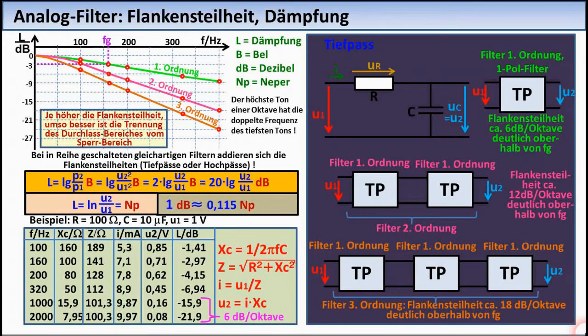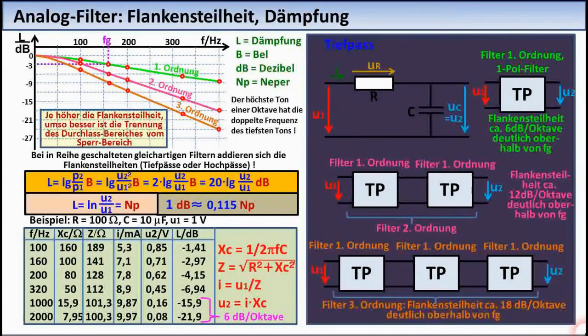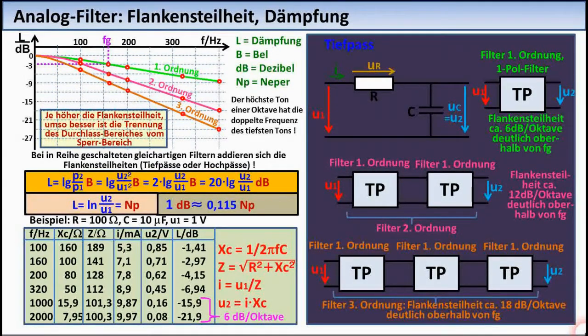We speak of attenuation when the output signal of a four-pole, that is, a double line, a filter, an amplifier, etc., is smaller than the input signal. If the output signal is larger than the input signal, we speak of amplification.